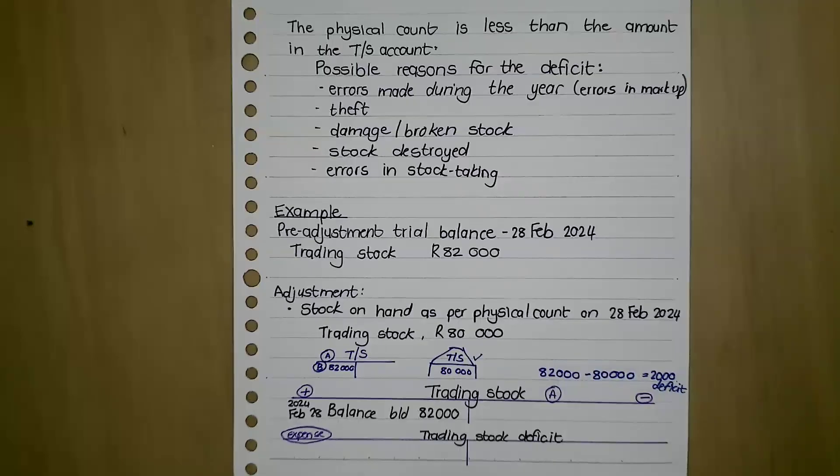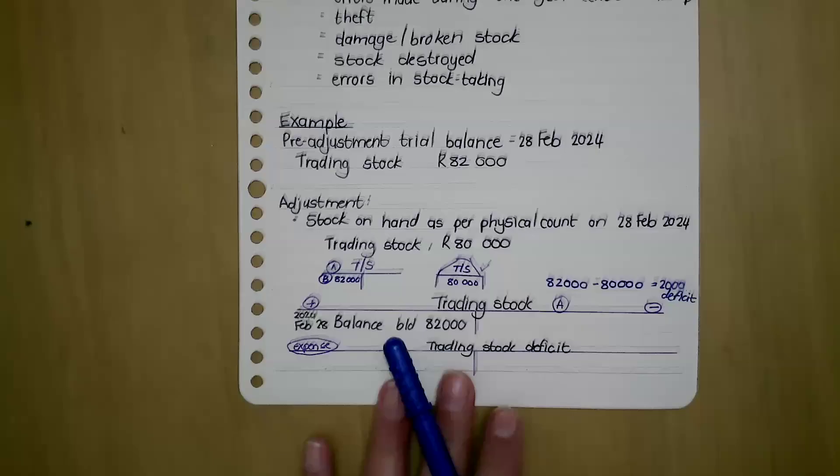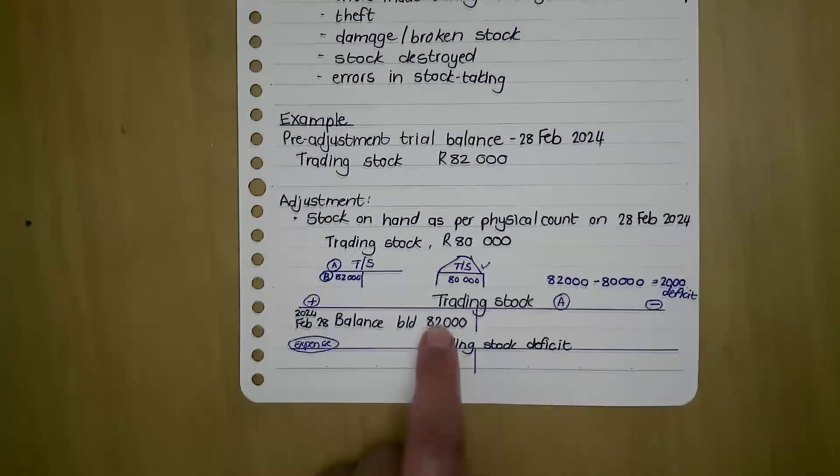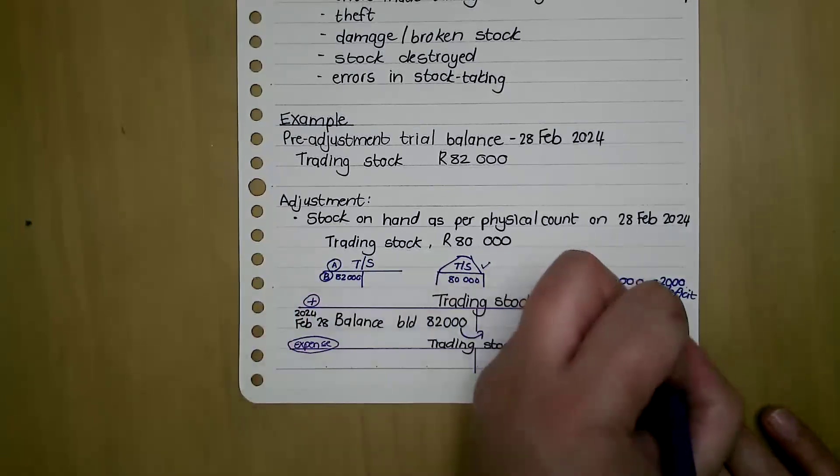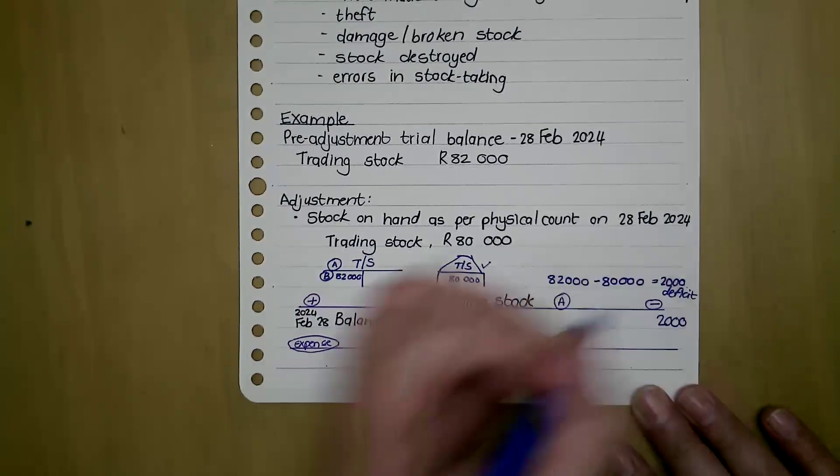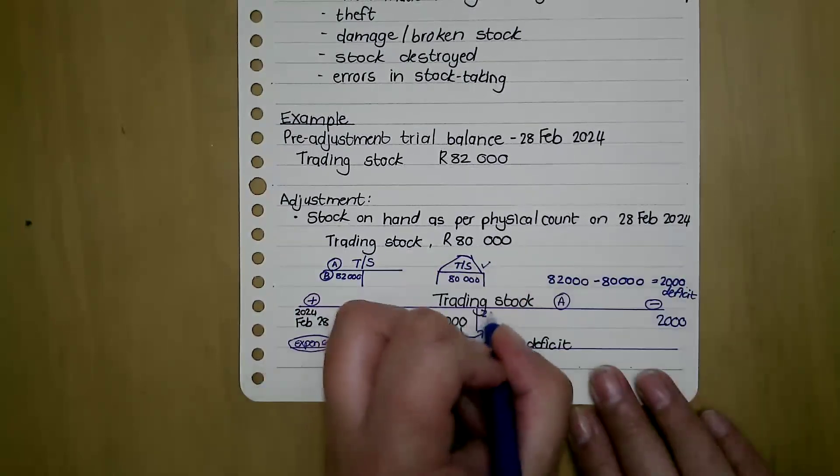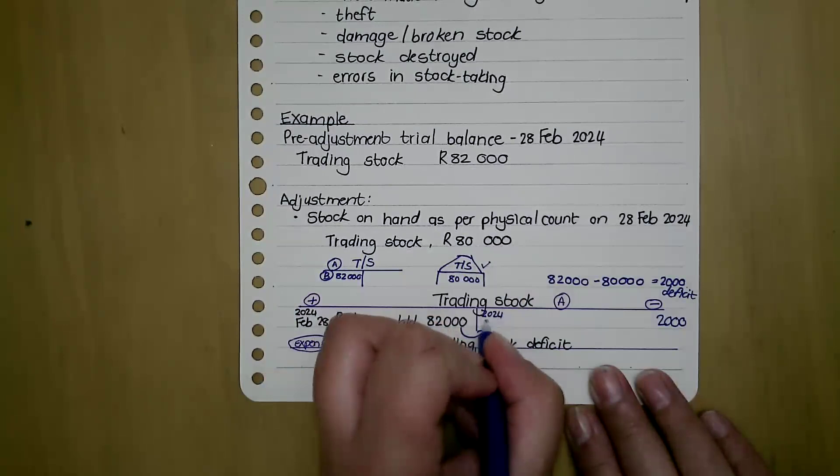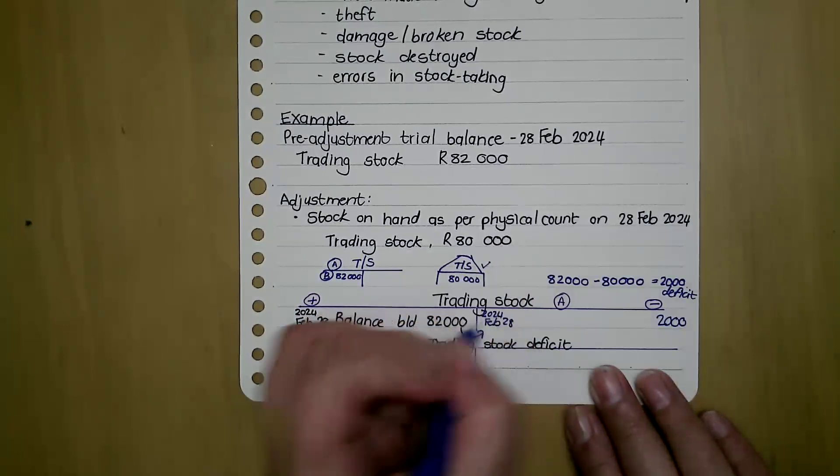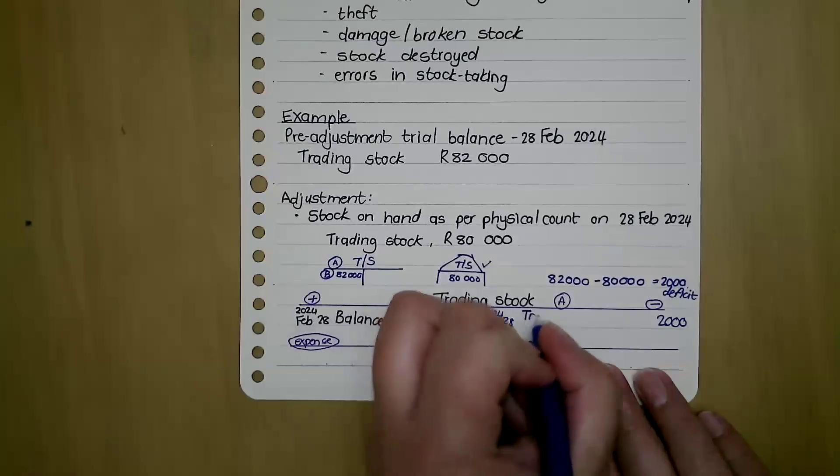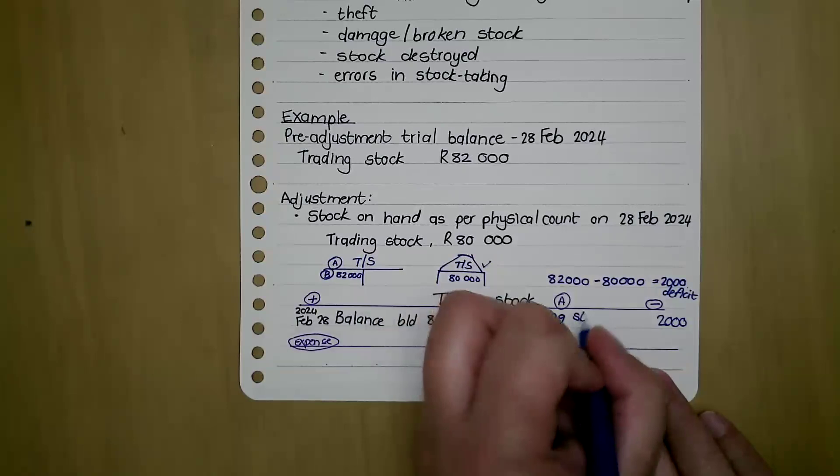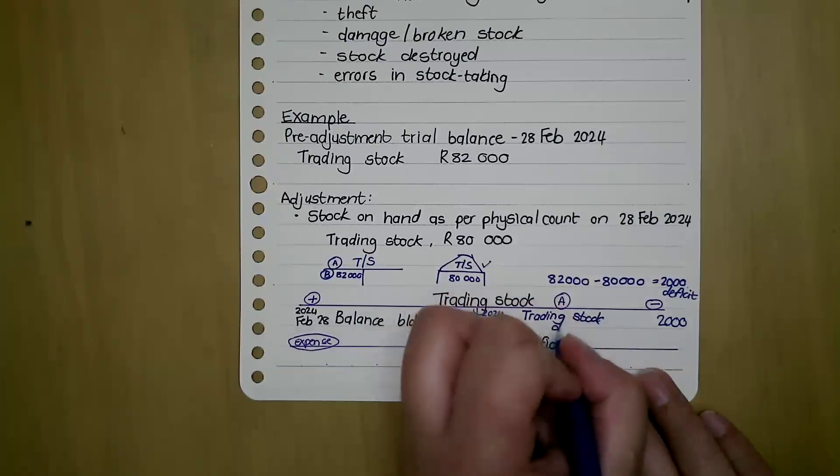We need to change it to 80,000, and I do that by looking at the difference and seeing that there's a 2,000 deficit. So in this example, I have my balance which is 82,000. We need to change it to 80,000 because it has to be the same as the physical count. So I'm going to take out 2,000, and that will go to trading stock deficit, which is an expense. The date is the end of the year, year-end adjustment.